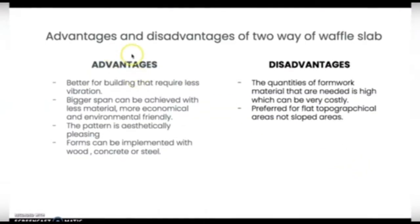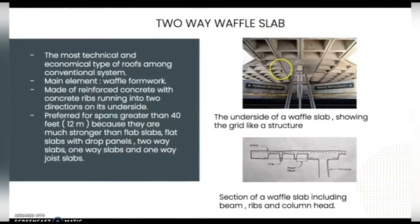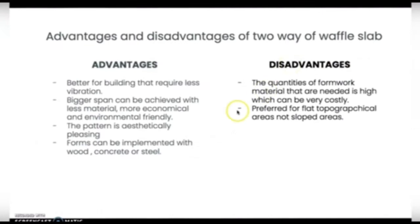We can get the advantages and disadvantages of the two-way waffle slab. The advantages are: better for buildings that require less vibration, it has a bigger span that can be achieved with less material, it is more economical and environmentally friendly. The pattern is also aesthetic, as you can see here. Formwork can be implemented with wood, concrete, or steel.